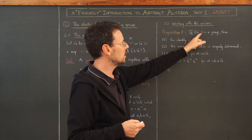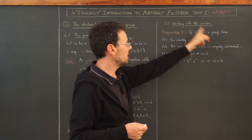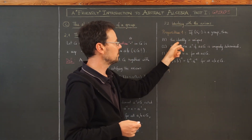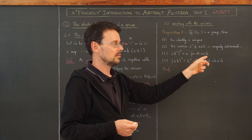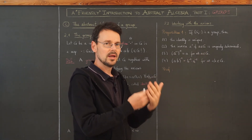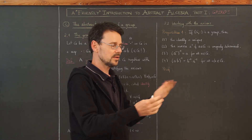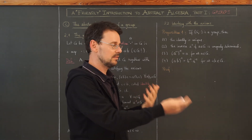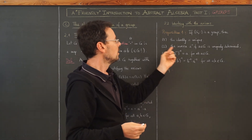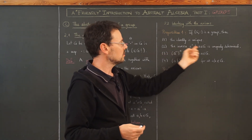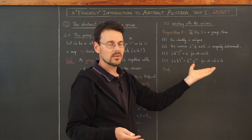If G with the dot operation is a group, then the following is true. First, the identity is unique — meaning if I found one neutral element or one identity, I can stop looking, because there can't be another one. Second, the inverse of any element of this group is also uniquely determined.